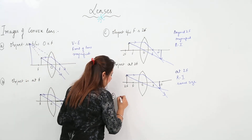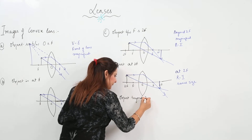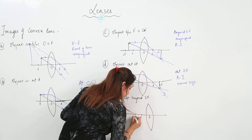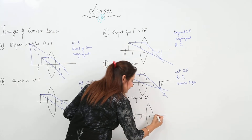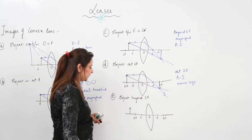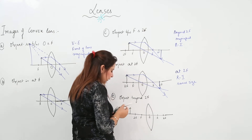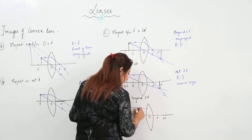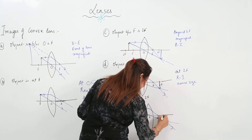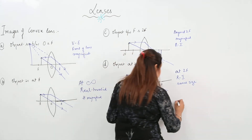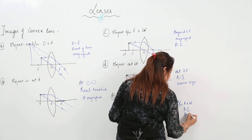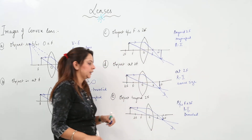Next is the object beyond 2F. We consider the same two rules: a ray coming parallel after refraction passes through focus, and a ray from O passes straight. We see that they meet between F and 2F. So the image is formed between F and 2F — real, inverted, and diminished, smaller than the object.